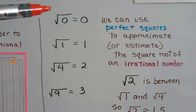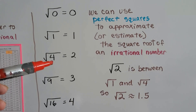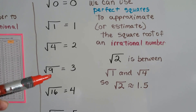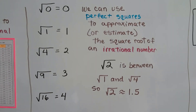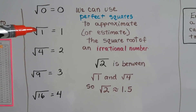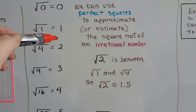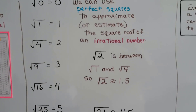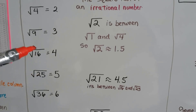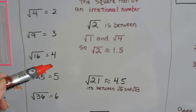When we look at these perfect squares: the square root of 0 is 0, square root of 1 is 1, square root of 4 is 2, square root of 9 is 3. We can use these perfect squares to approximate the square root of an irrational number. So the square root of 2 is in between 1 and 4, meaning the answer is between 1 and 2 — approximately 1 and a half. The square root of 21 is in between 16 and 25, so between 4 and 5 — approximately 4 and a half. The square root of 53 is between 49 and 64, approximately 7 and a half. And the square root of 78 is between 64 and 81 — approximately 8 and a half.